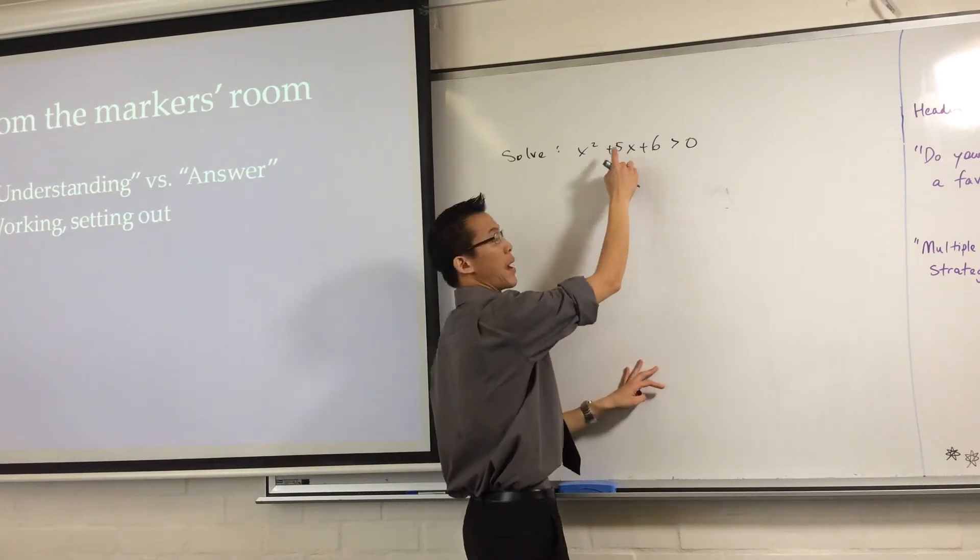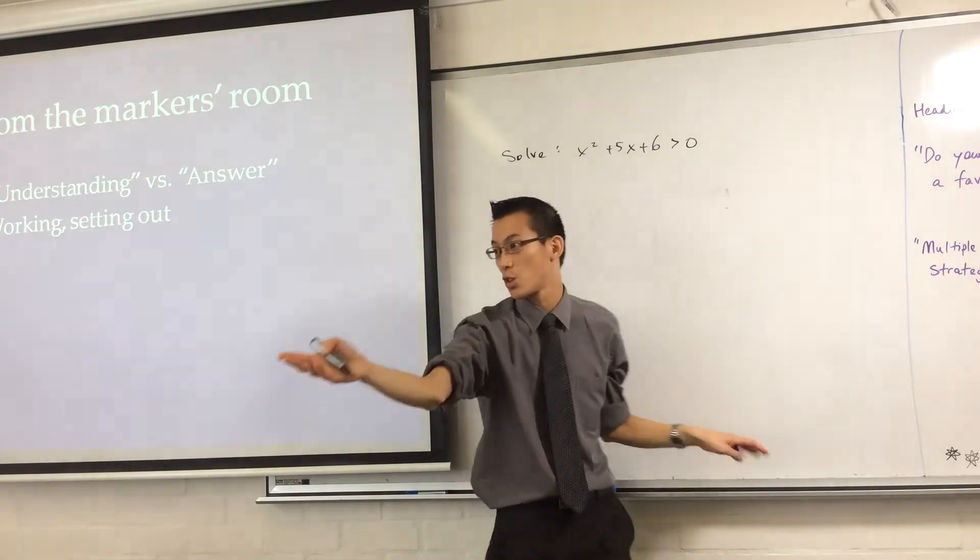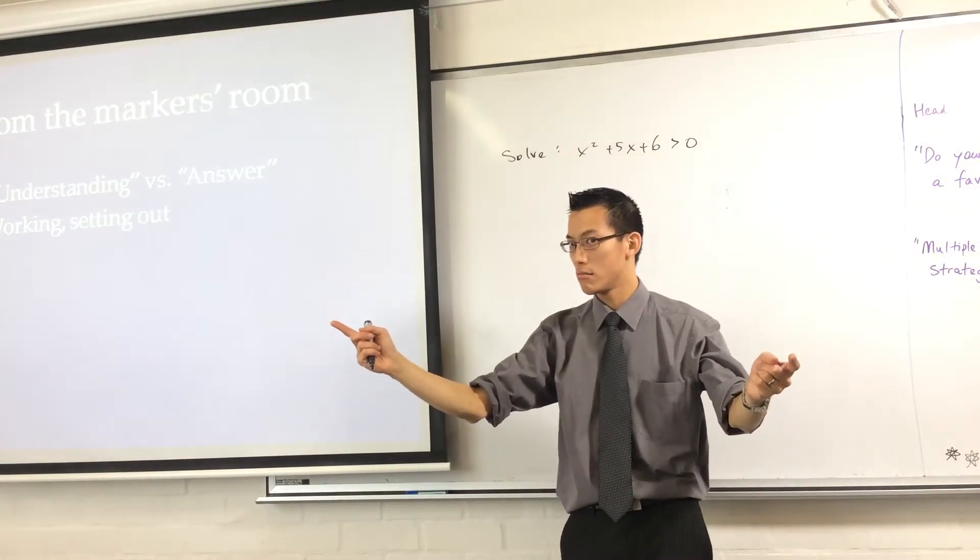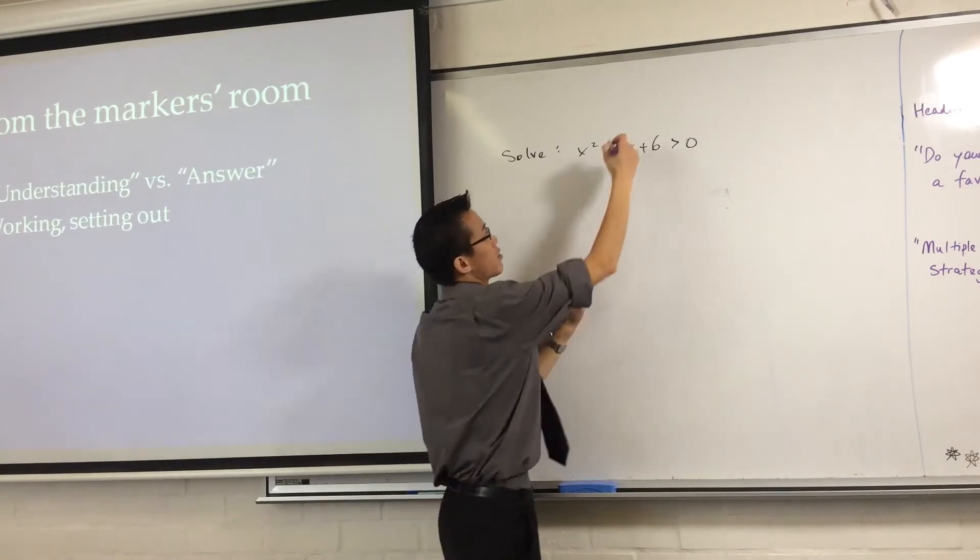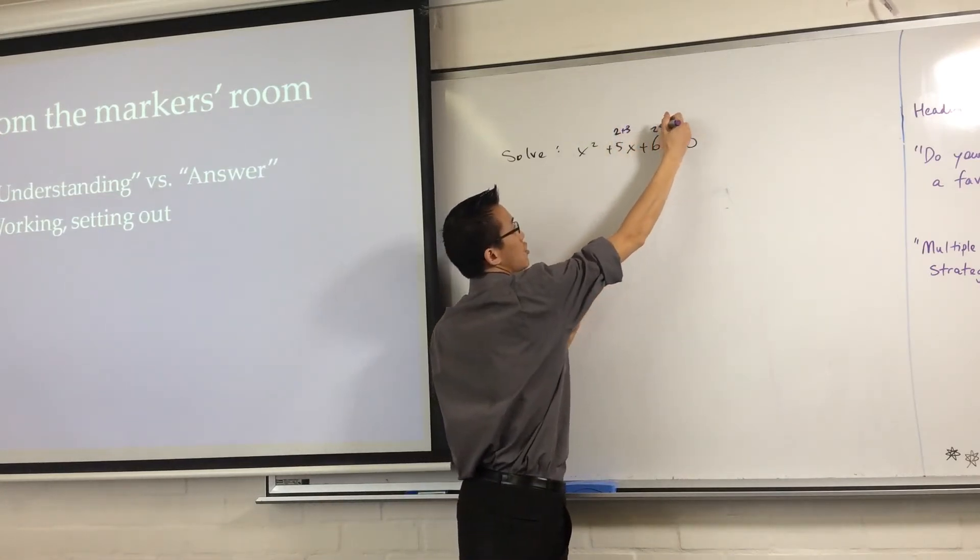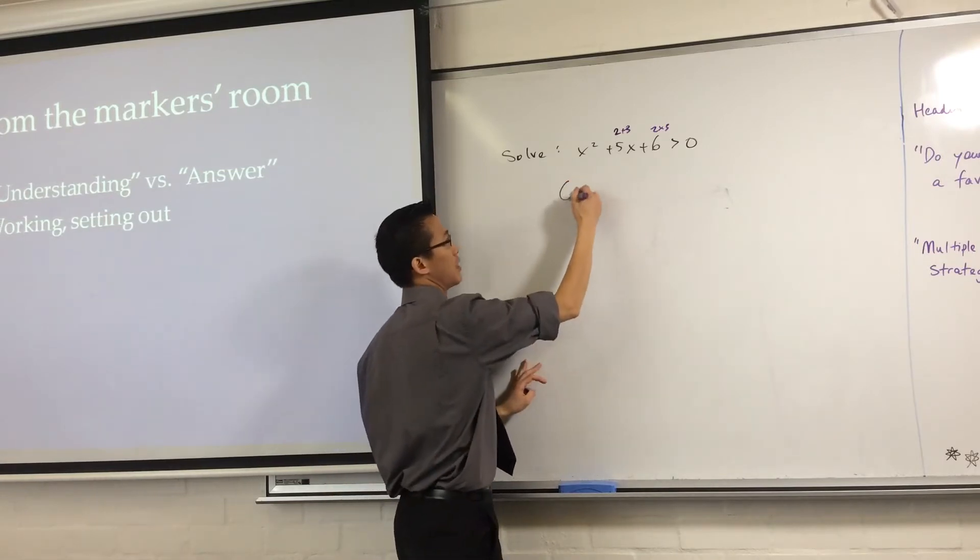So, you think to yourself, I need a pair of numbers that adds to 5, and a pair of numbers that multiplies to 6. And those two numbers are? 2 and 3. 2 plus 3 will give you 5, and 2 times 3 will give you 6. So, you take those two numbers and you do this.